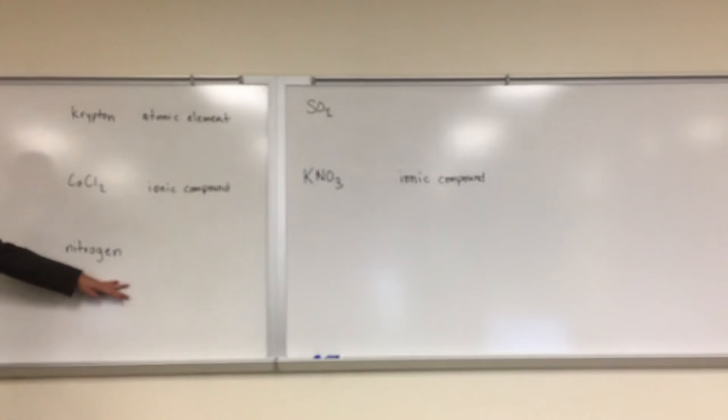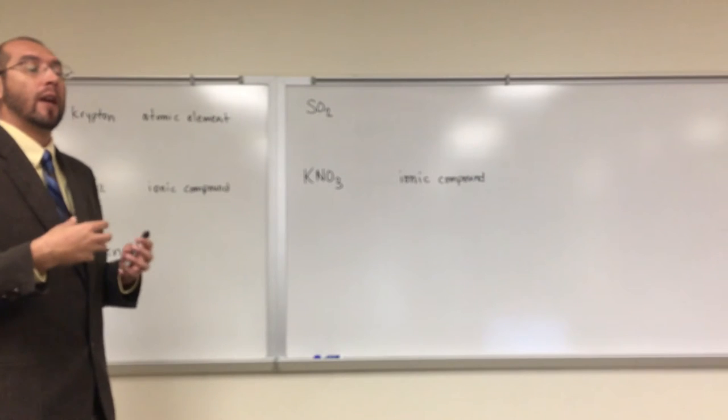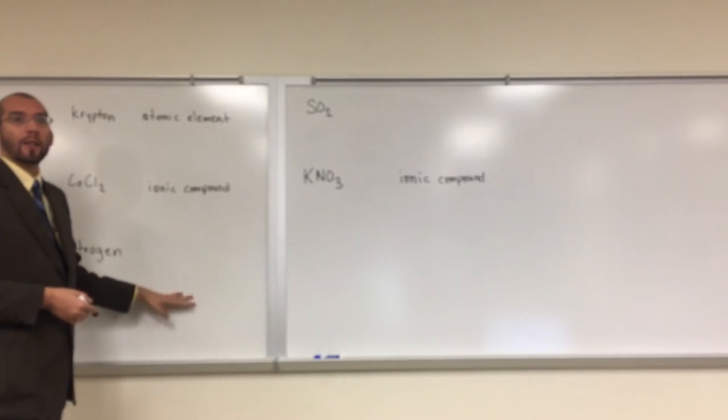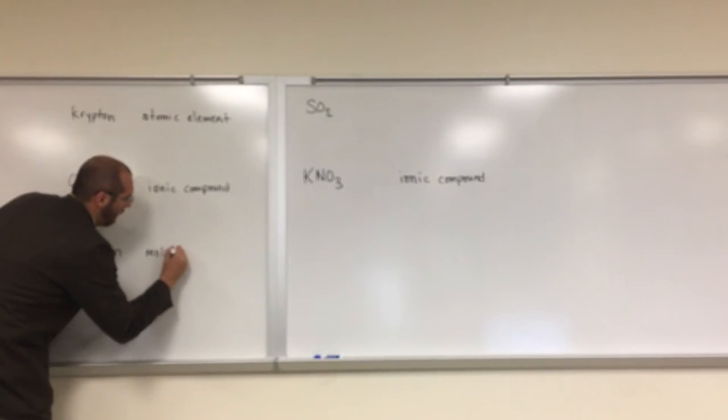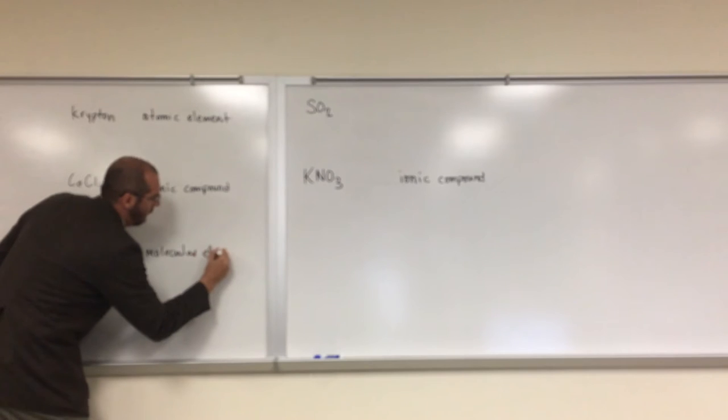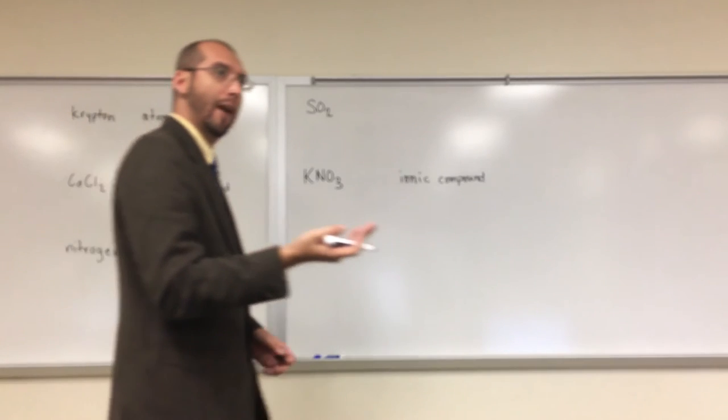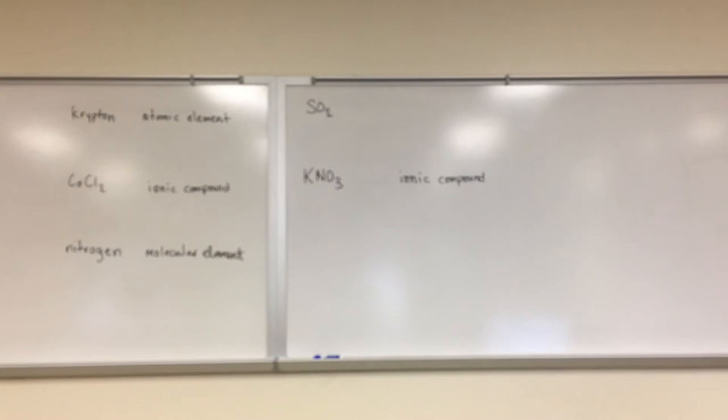Okay? Also, we probably see nitrogen on the periodic table. It's also an element, but remember it's a diatomic element. So that means whenever we have nitrogen, it's actually a molecule N2. Okay? So it is an element, but we call it, in this case, a molecular element because it's diatomic. You have to remember all your diatomics. That's another list of things that you have to remember, like your polyatomic ions.